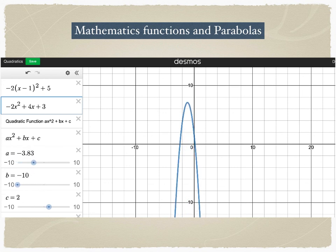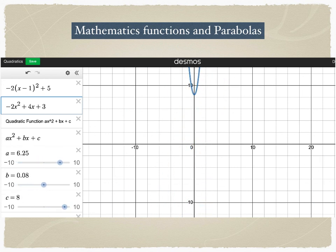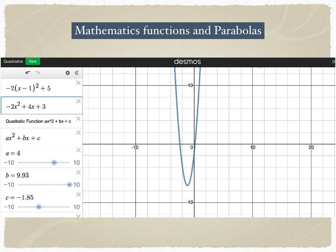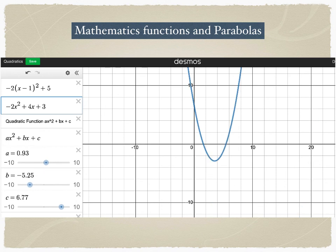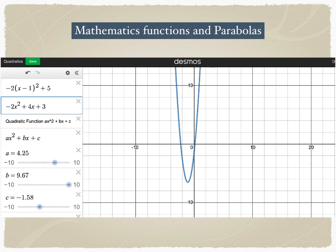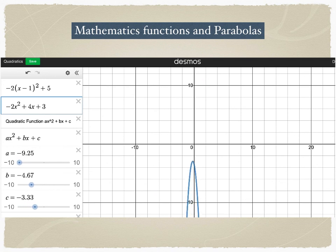The parabola is stretching, compressing, moving up, moving down, moving to the left, moving to the right. But regardless of the value of a, b, or c, the shape of the quadratic function is always going to be a parabola.